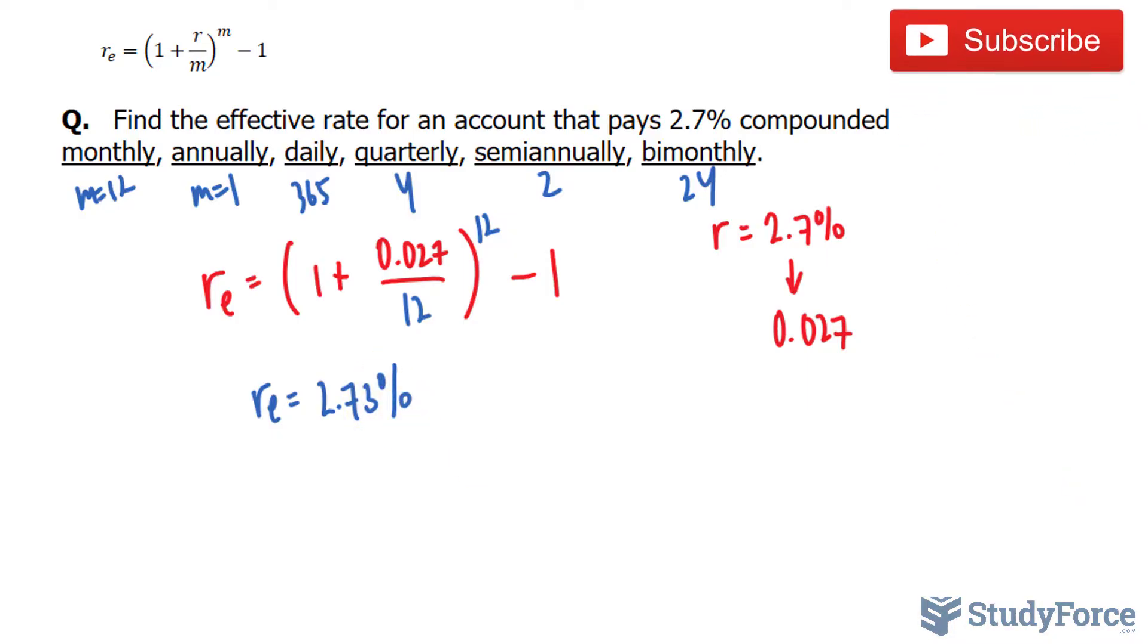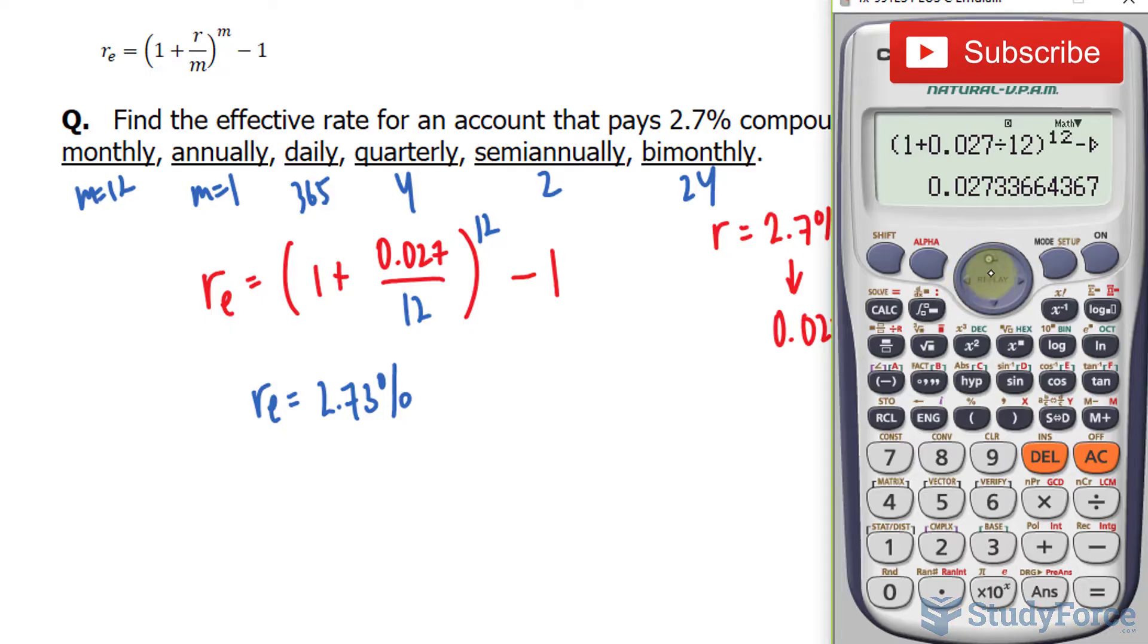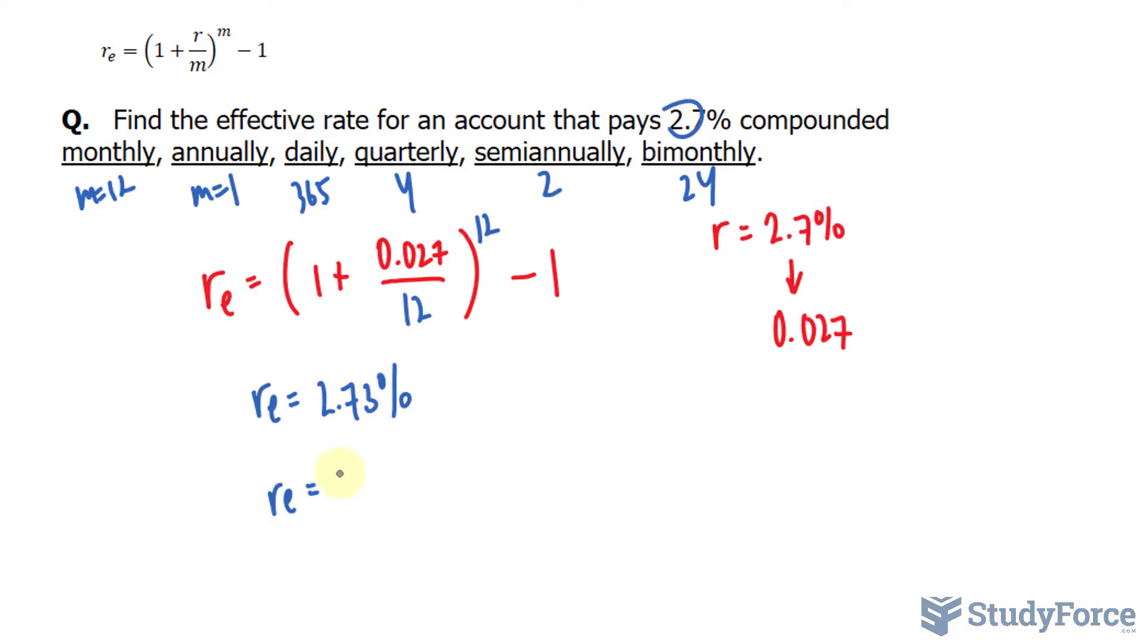Let's see how this changes if we make m equal to 1. So going back here, I'll replace this 12 with a 1. And that with a 1. And we end up with the same percentage we started with, 2.7%.